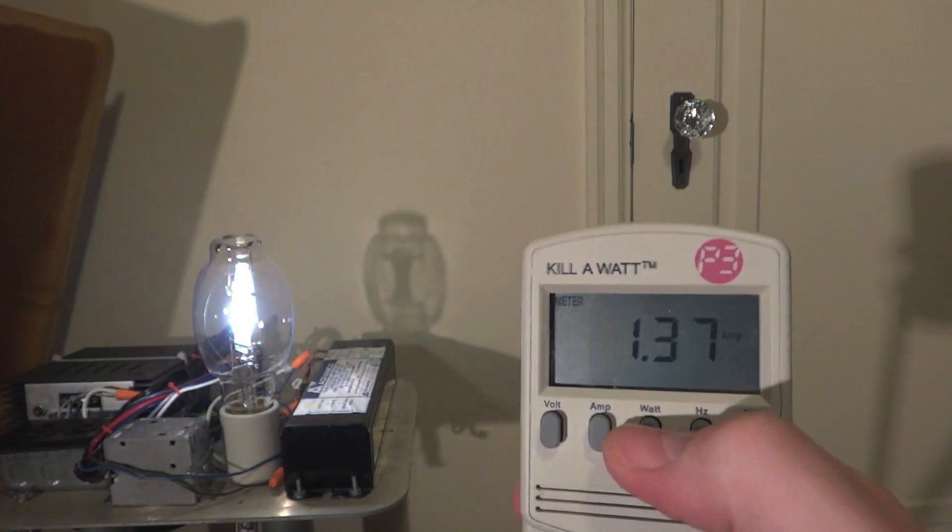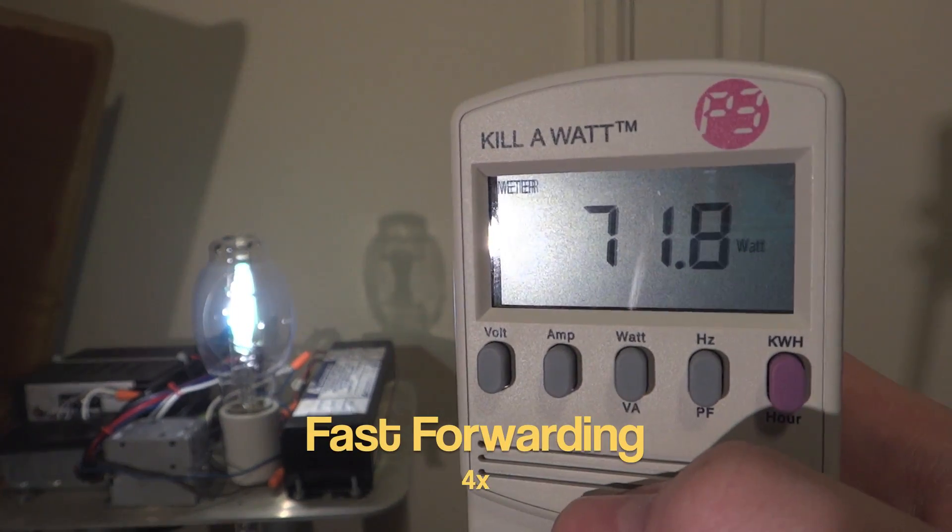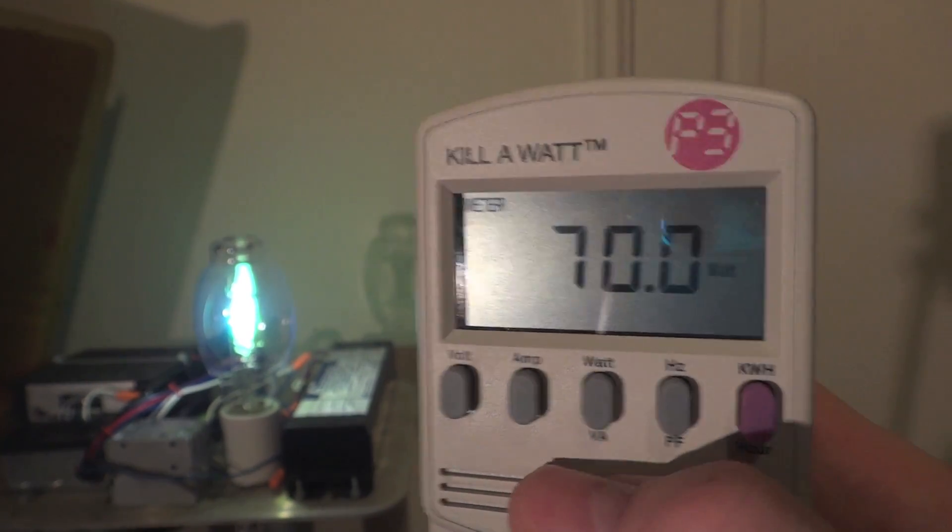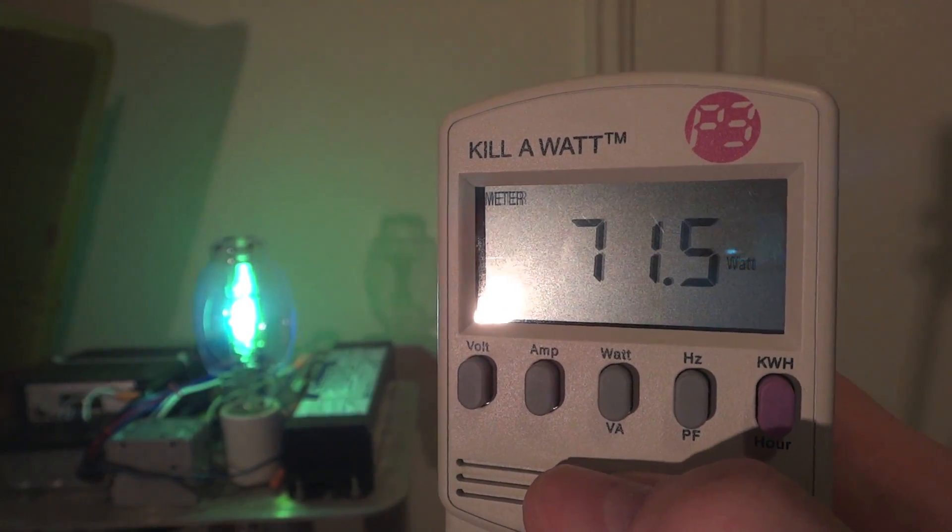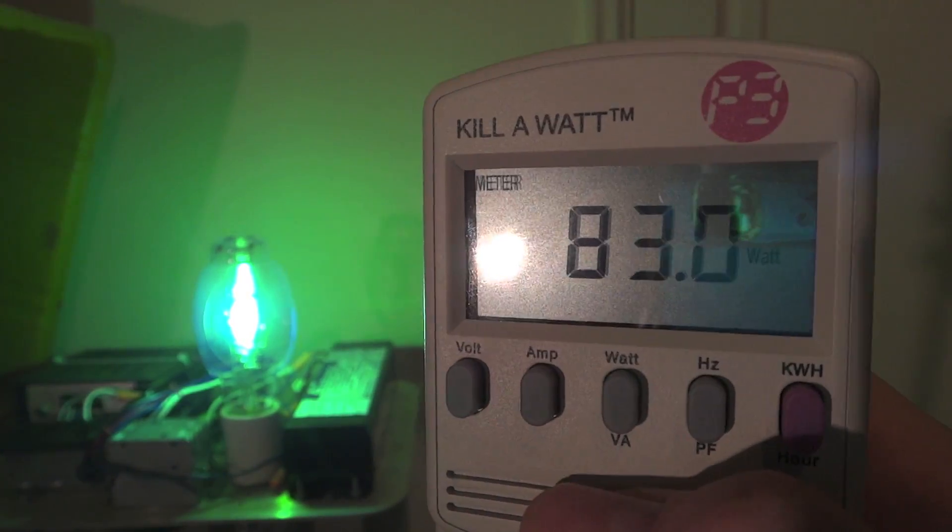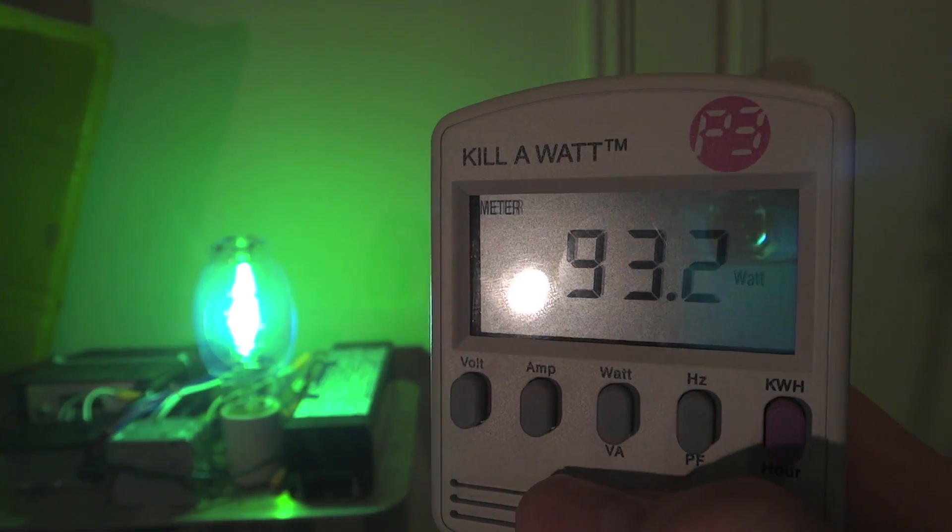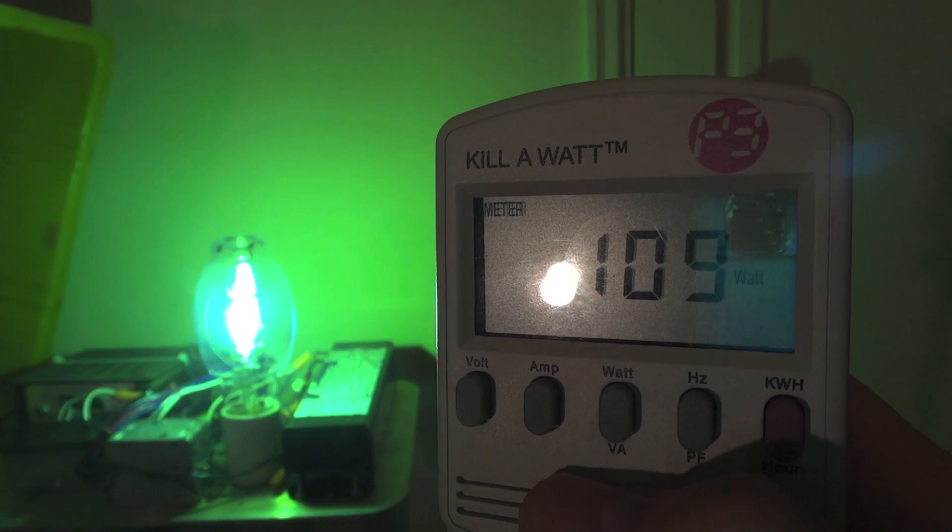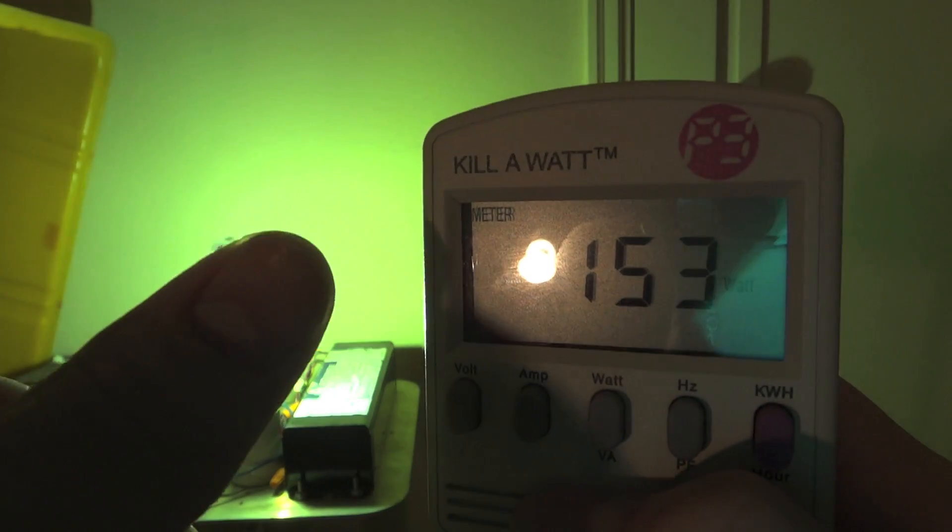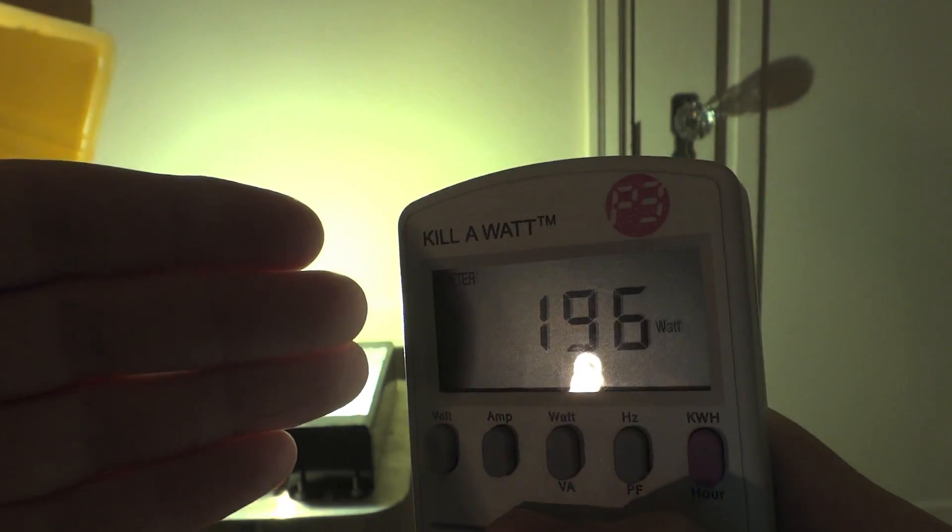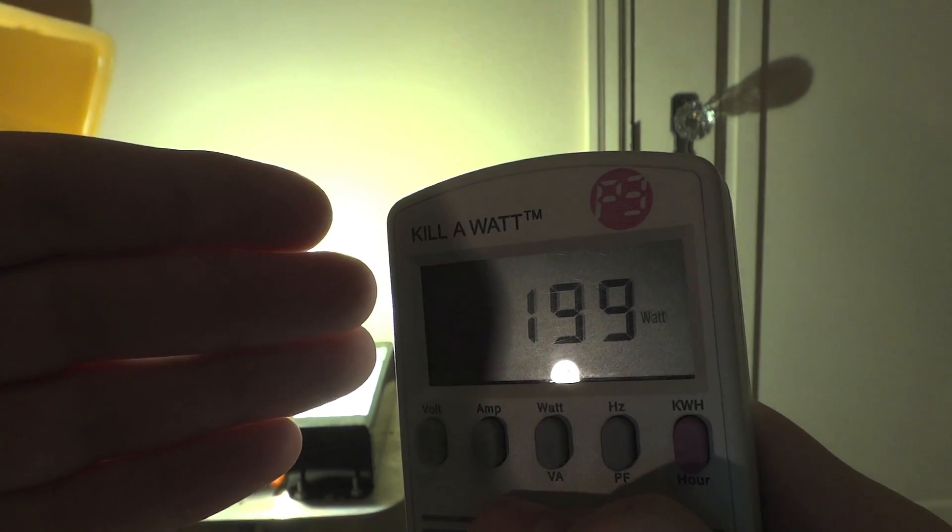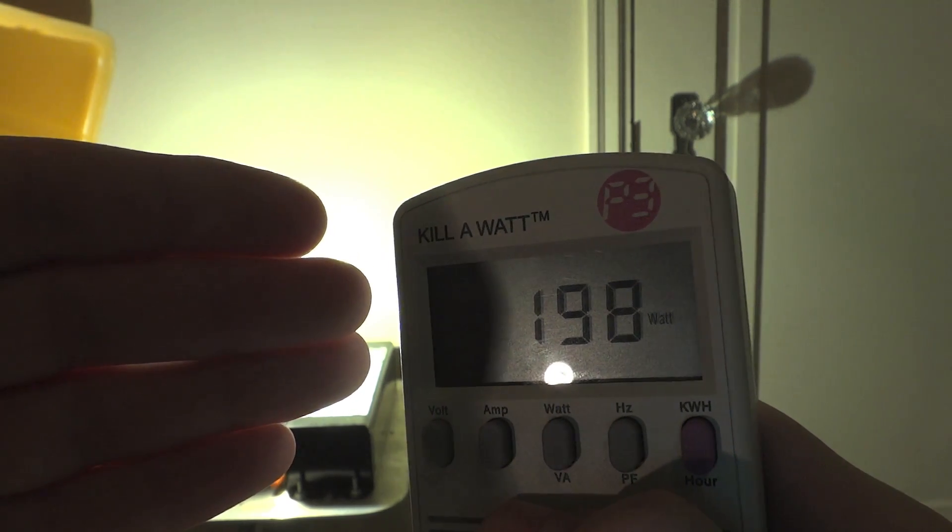There is the amps. There is the watts. And here we go. You can see the light. The bulb is now at full brightness, and it has leveled out at around 198 watts.